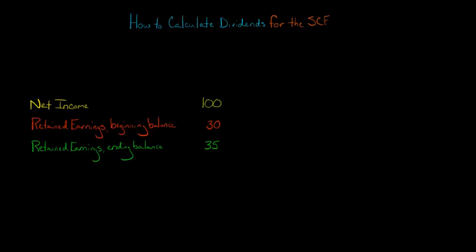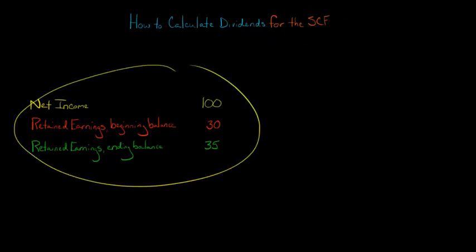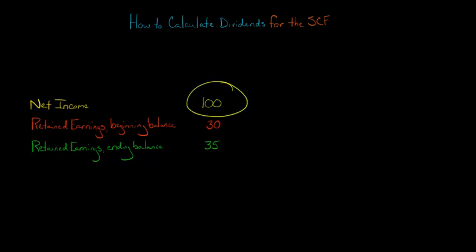In this video, we're going to discuss how you can calculate dividends when you're preparing the statement of cash flows. Let's say you have the following information. You know that for a company, the net income for the period was $100, the beginning balance of retained earnings was $30, and the ending balance of retained earnings was $35.